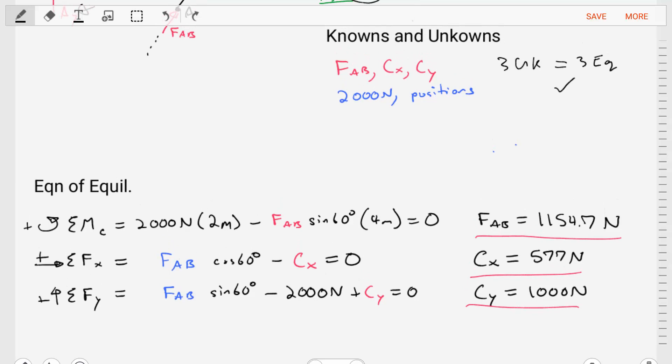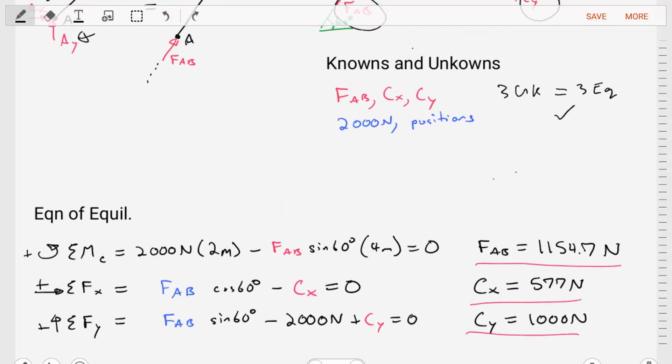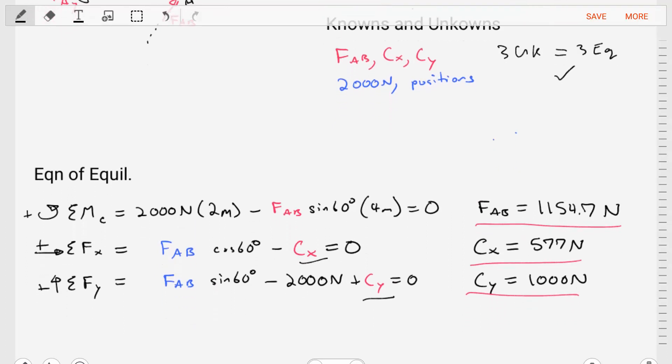Then we can do the sum of the forces in the X and the sum of the forces in the Y. And since we know FAB now, the only unknowns we have are CX and CY, where CX is 577 Newtons and CY is 1,000 Newtons. And so,